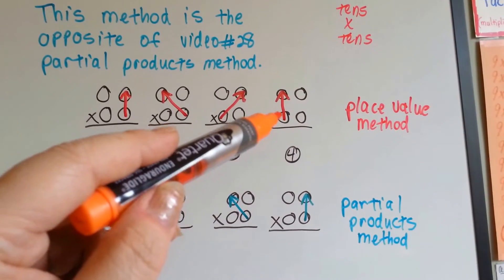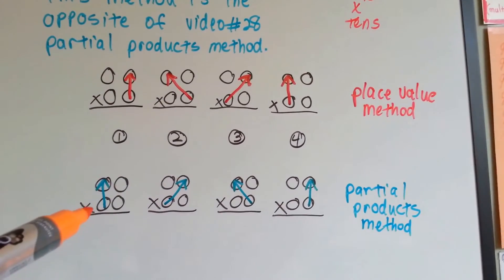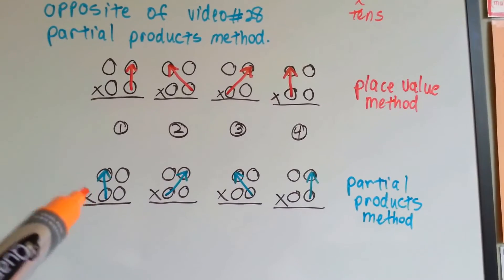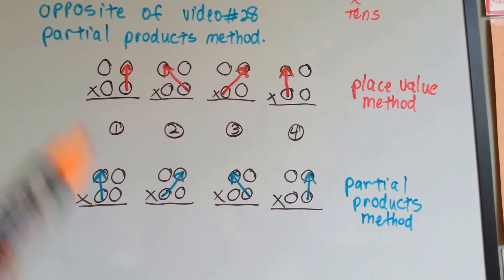And the last thing we did for place value was multiply the 10s to the 10s, and they did that first. So see how partial products method is the backwards method of place value?